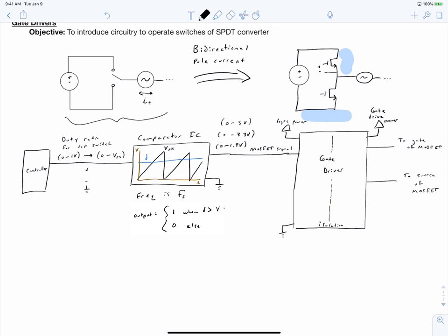This whole situation repeats again for the bottom MOSFET. That is to say, we have an incoming duty ratio referenced to the common, and we'll send it into a comparator and a gate driver for the bottom MOSFET.